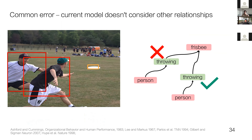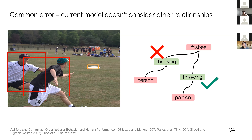One recurring error: the model looks at an image and predicts that both people are throwing a Frisbee, lacking any higher-order reasoning to recognize that if one person is throwing a Frisbee, a second person can't possibly also be throwing it—they're probably trying to catch it. This error occurs because each relationship prediction is made in a purely feedforward manner, without reevaluating predictions in context of all other predictions. In contrast, the human visual processing system is abundant with feedback connections that enable more coherent, cohesive predictions and can correct incorrect assumptions automatically.